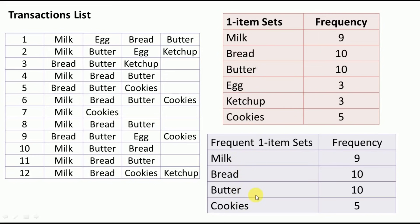Now we generate two-itemsets from the four frequent one-itemsets. The combinations are: milk-bread, milk-butter, milk-cookies, bread-butter, bread-cookies, and butter-cookies — six possibilities in total.